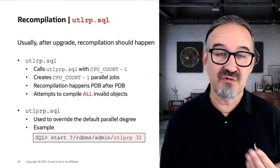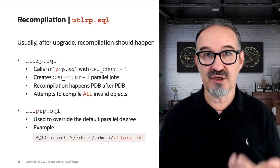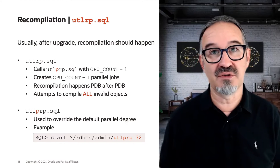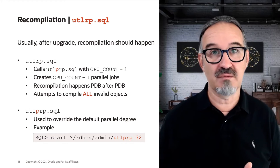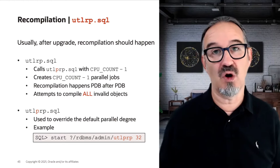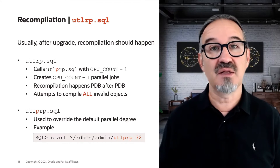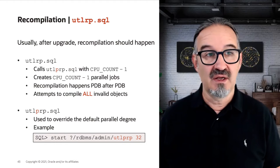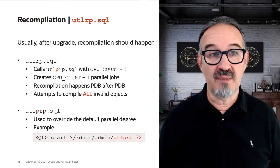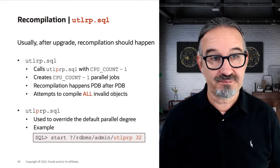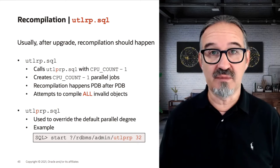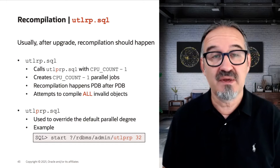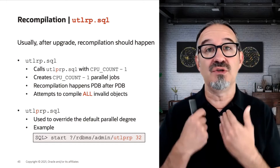It happens with UTL-RP — RP for recompile. UTL-RP does nothing else than reading the CPU count from your system, subtracting one, and then giving this to UTL-PRP — parallel recompile. It recompiles all objects, pdb after pdb, and all objects means also your objects.